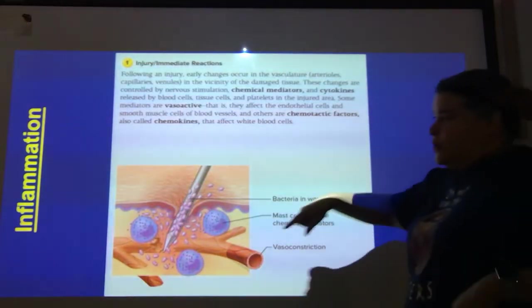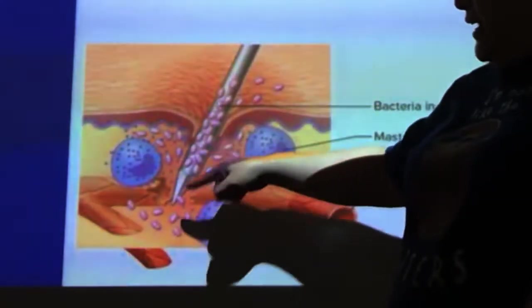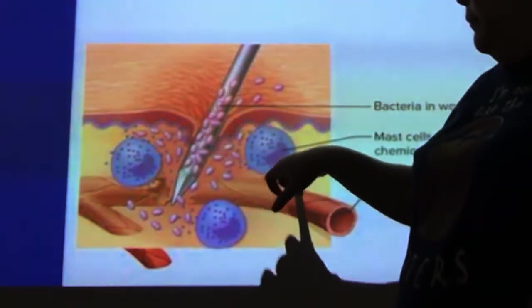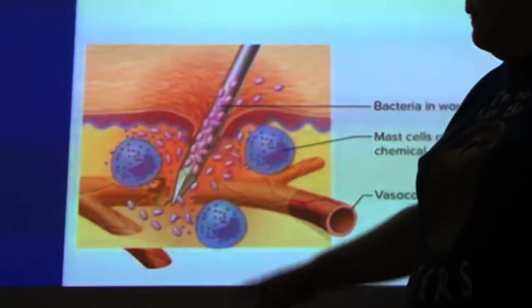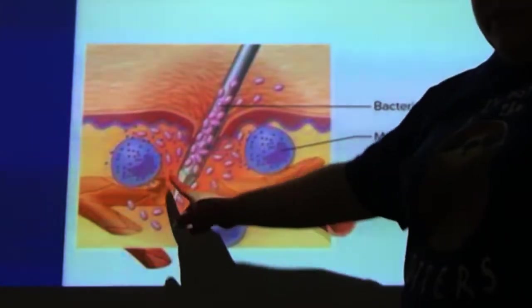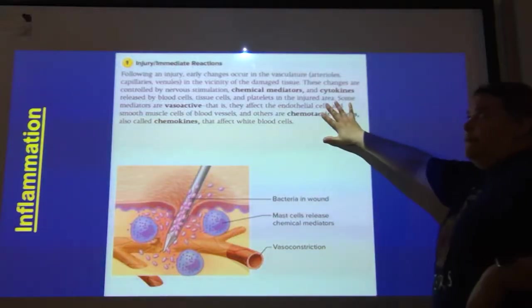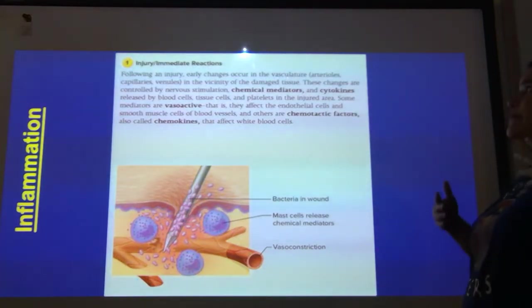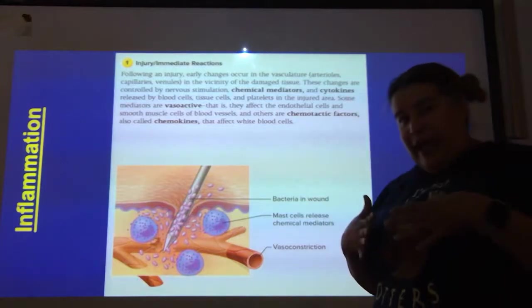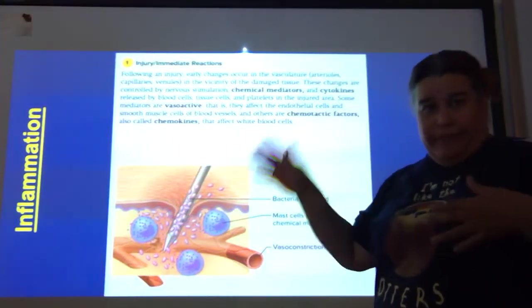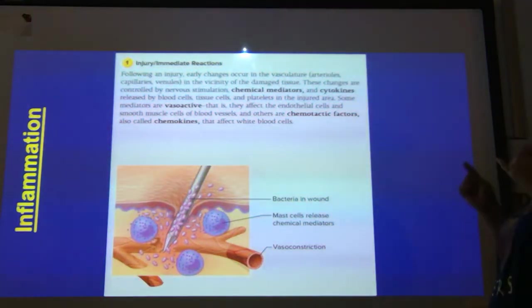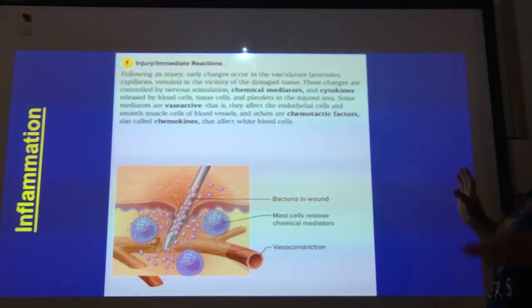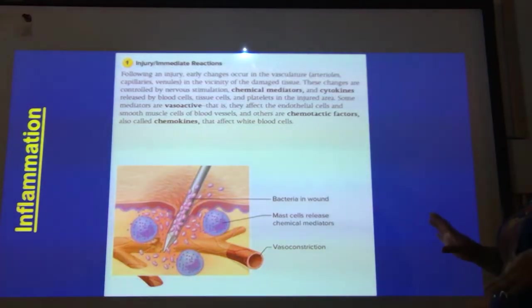Injury and immediate reaction: I have a nail going through the skin — you can see it carried bacteria with it. I already have my mast cells, anchored at potential points of entry, and you can see this actually ruptured a blood vessel. Following an injury, early changes occur in the vasculature — your arteries, veins, and capillaries — controlled by nervous system stimulation, chemical mediators, and cytokines released by blood cells, tissue cells, and platelets at the injured area.